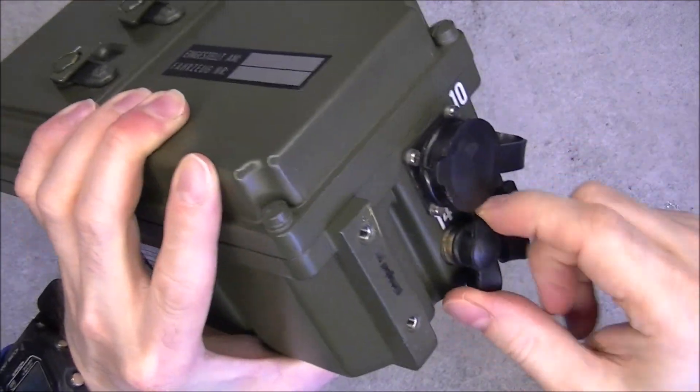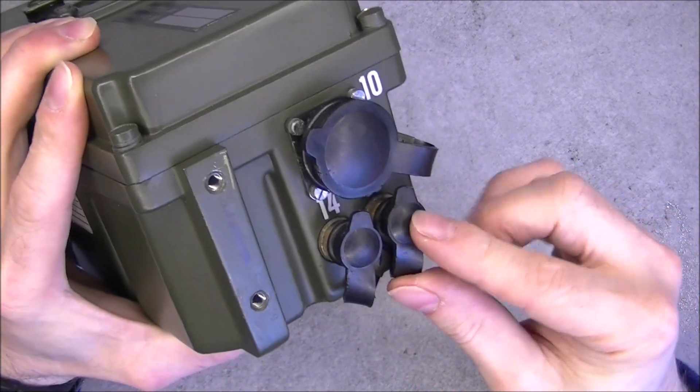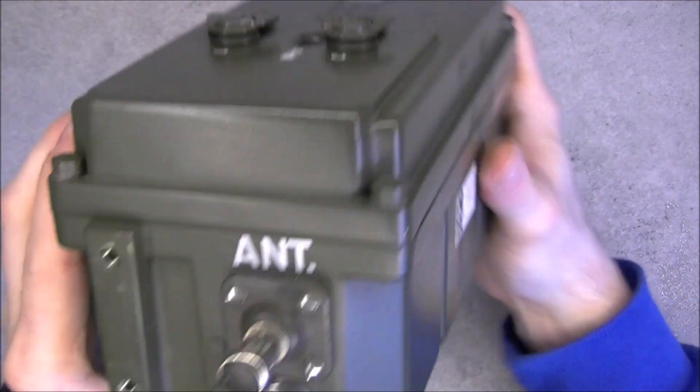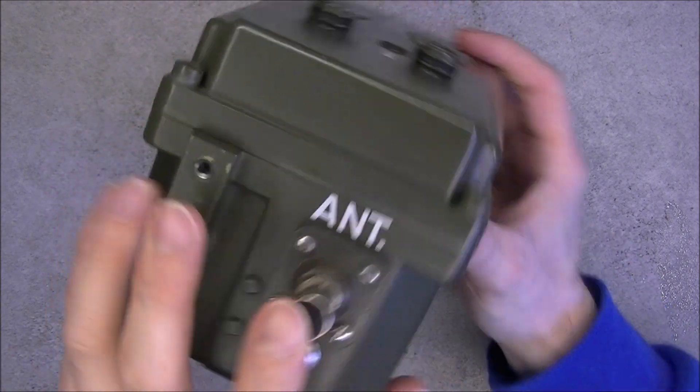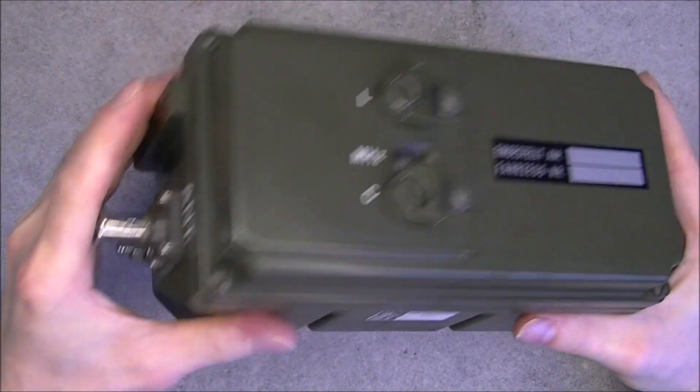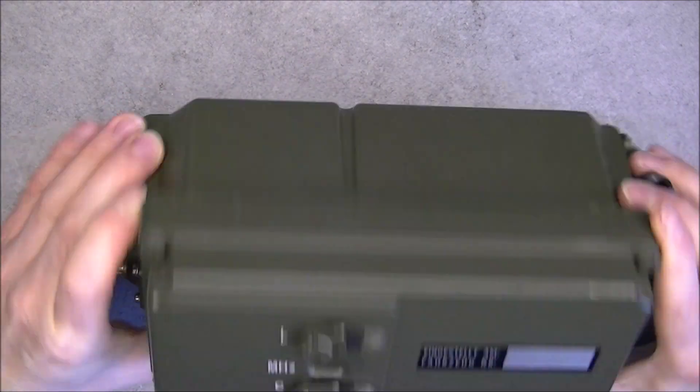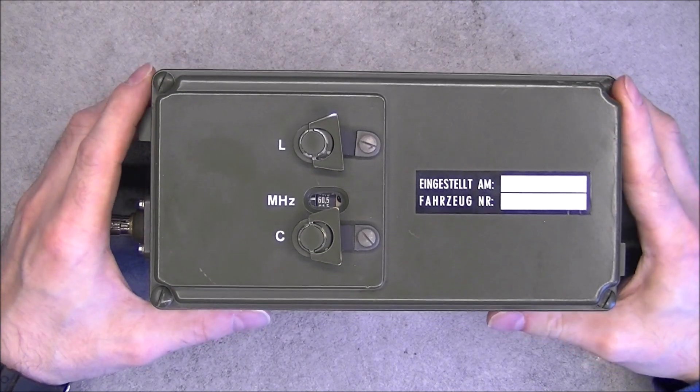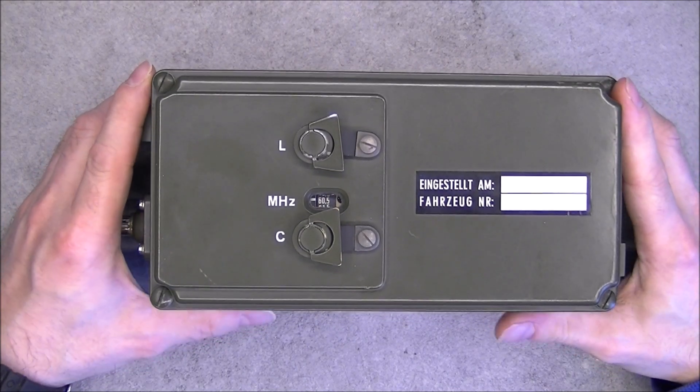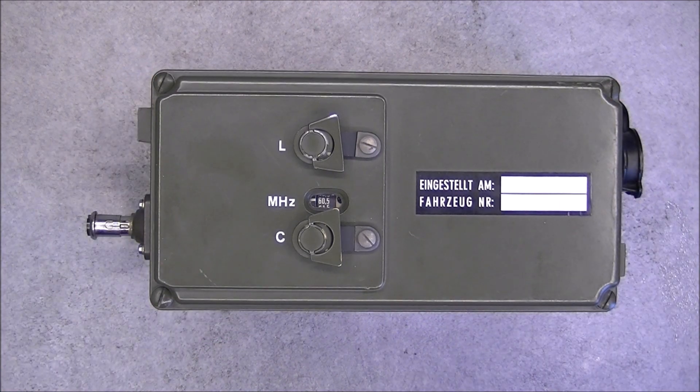Here you have two BNCs for the antenna input but the cap is very hard to undo. On this side you have a ground terminal and the antenna quick release connector. Apart from this, just a very heavy box, I believe more than two kilos, olive green.